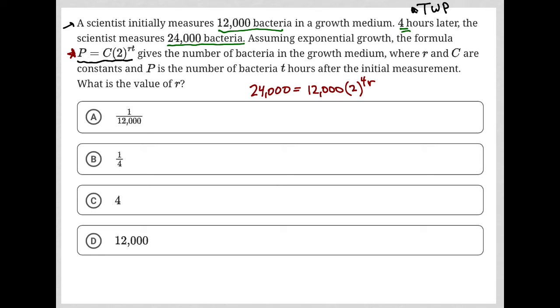And that becomes what we solve, right? We're trying to solve for this scenario. So I'd start off by dividing both sides by 12,000. So this is gone. 24,000 divided by 12,000 is two, so I have two equals two to the four R power.